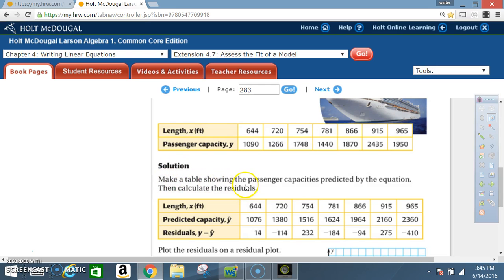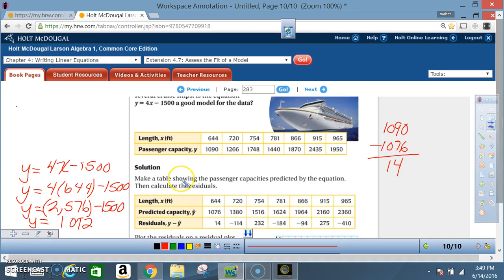Solution: Make a table showing the passenger capacities predicted by the equation, then calculate the residuals. When we make our table, we use the same x values given in the initial table. We have to determine the y value based on the equation, so our equation was y equals 4x minus 1500.